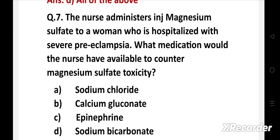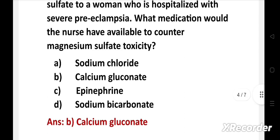The nurse administers injection magnesium sulfate to a woman who is hospitalized with severe preeclampsia. What medication would the nurse have available to counter magnesium sulfate toxicity? Option a: sodium chloride, b: calcium gluconate, c: epinephrine, d: sodium bicarbonate. The right answer is option b, calcium gluconate. Calcium gluconate is used for magnesium sulfate toxicity. Calcium antagonizes the toxic effect of magnesium, and these ions electrically oppose each other at their sites of action.